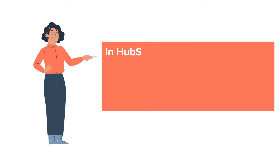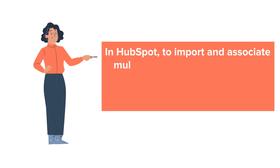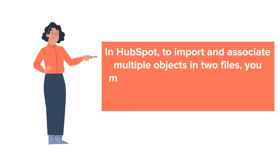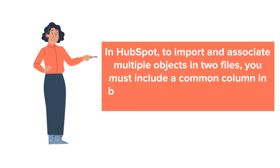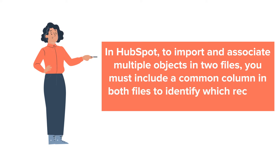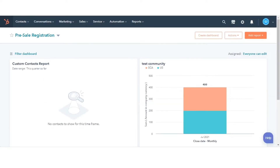In HubSpot, to import and associate multiple objects in two files, you must include a common column in both files to identify which records will be associated. Let's see how you can do this.